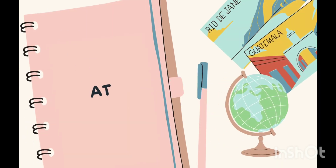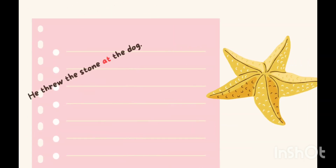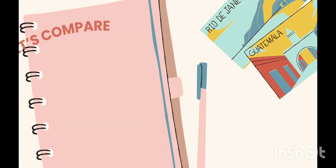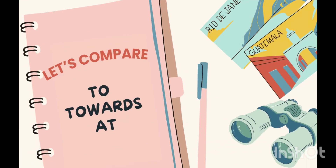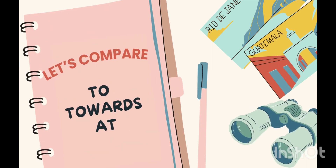Now, 'at' in terms of directions. In the sentence 'He threw the stone at the dog,' 'at' implies that he wanted to hit the dog with the stone. Let's do a quick comparison to understand these three prepositions correctly: 'to,' 'towards,' and 'at.'